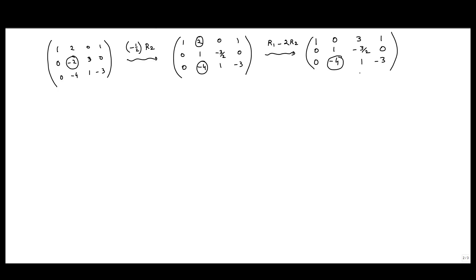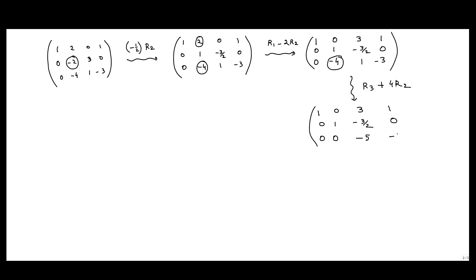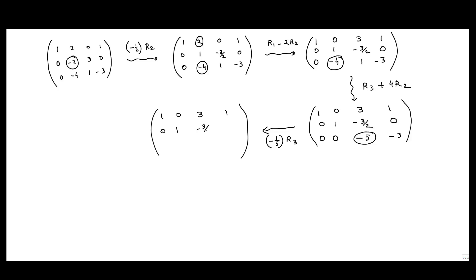We now make the element at position (3,2) equal to zero by doing R3 ← R3 + 4R2. The first two rows stay the same and the third row becomes [0, 0, −5, −3]. Since the leading element of row 3 is −5, we do (−1/5)·R3 to get [0, 0, 1, 3/5]. This matrix is now in row echelon form.